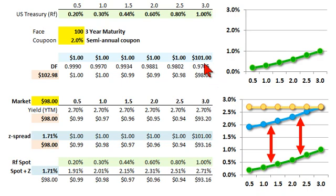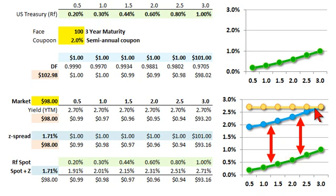This is David of Bionic Turtle with an illustration of the Z-Spread, which is an improvement over the nominal credit spread. I'll show you both — first the nominal credit spread and then why the Z-Spread is an improvement.